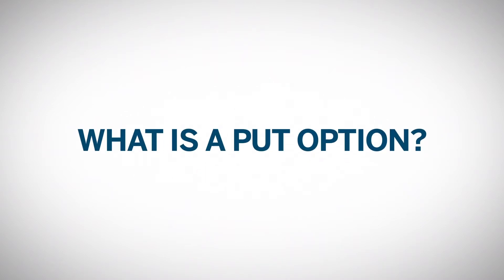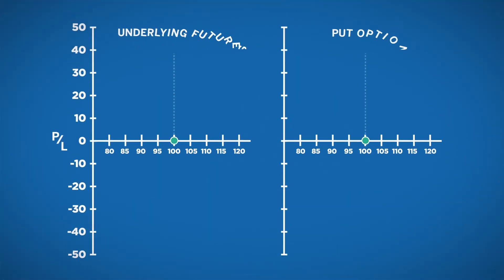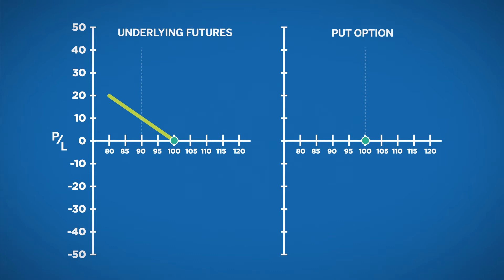What is a put option? A put option is the right to sell the underlying future at a certain price. When traders short a futures contract, they profit when the market moves lower. The put option has a similar profit potential to a short future if the market goes down. When prices move downward, the put owner can exercise the option to sell the future at the original strike price.